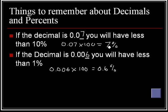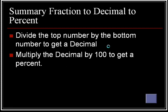A quick summary of fractions to decimals to percents. You divide the top number by the bottom number to get a decimal. You multiply the decimal by 100 to get a percent.